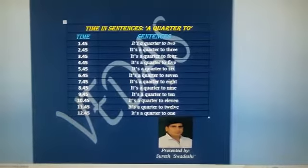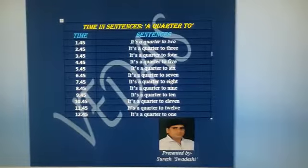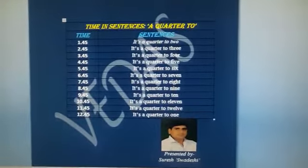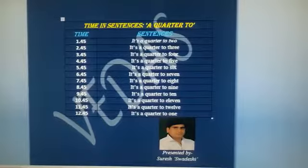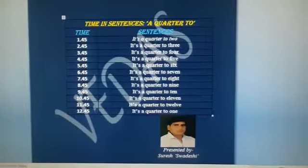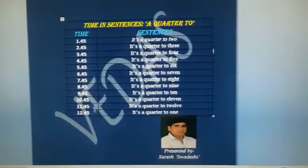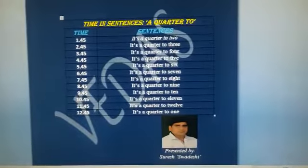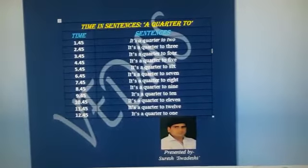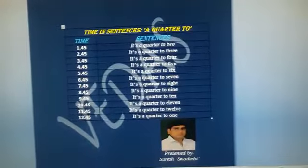When it is 9:45, it is said it's a quarter to ten. When the time is 10:45, it is said it's a quarter to eleven. When the time is 11:45, we say it's a quarter to twelve. When the time is 12:45, we say it's a quarter to one.